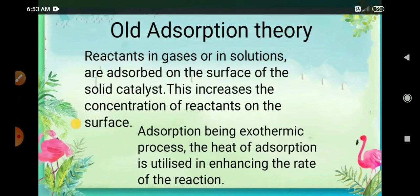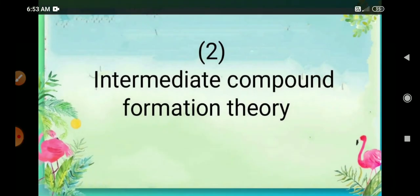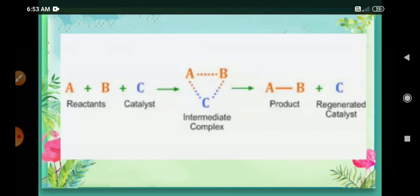To summarize the old adsorption theory: reactants in gases or solutions are adsorbed on the surface of a solid catalyst, increasing the concentration of reactant on the surface. Adsorption being an exothermic process, the heat of adsorption is utilized in enhancing the rate of reaction. The second theory is the intermediate compound formation theory.